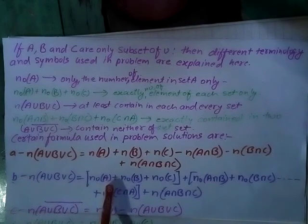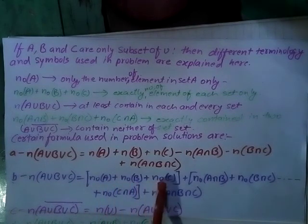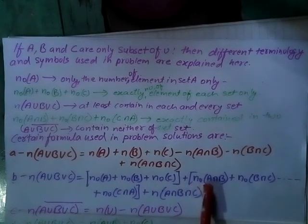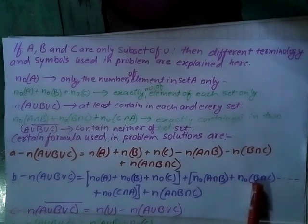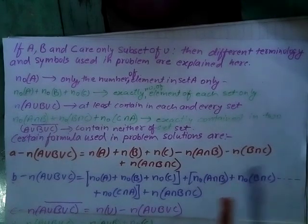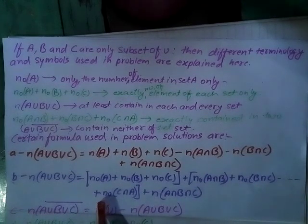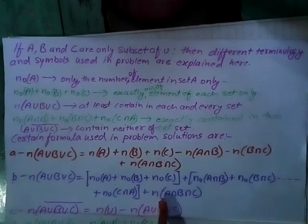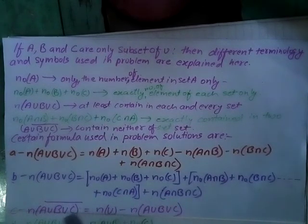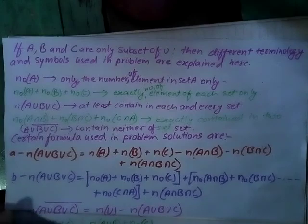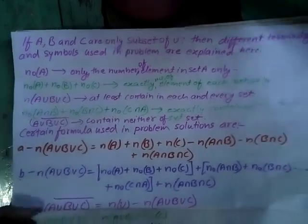The next formula: N(A∩B∩C) = N₀(A) + N₀(B) + N₀(C) + N₀(A∩B) + N₀(B∩C) + N₀(C∩A) + N₀(A∩B∩C).